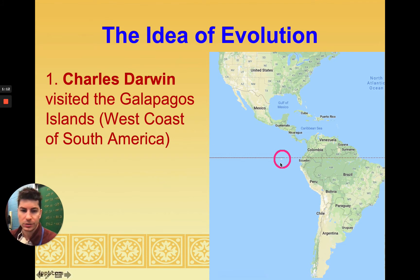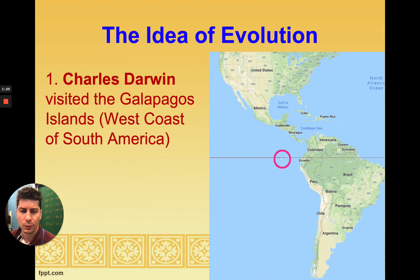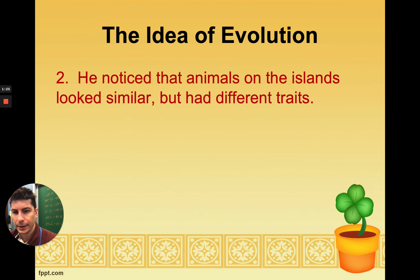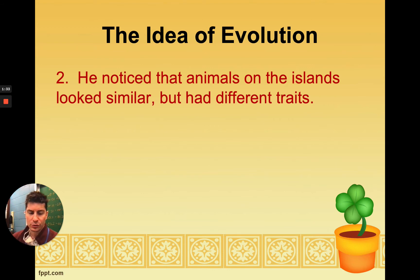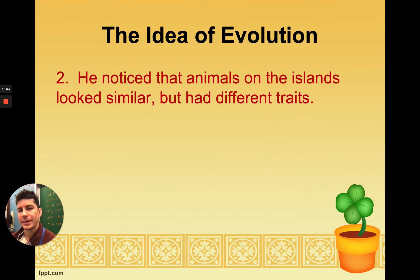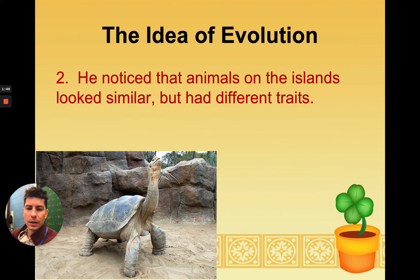The Galapagos Islands are off the west coast of South America, a little bit closer to the equator, so there are a lot more organisms and different species down there than where we're located. Darwin noticed that on these islands the animals looked similar but had different traits. When we talk about traits, we mean adaptations — things that help one organism survive and reproduce better than another.